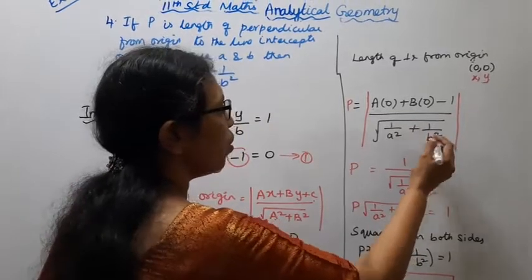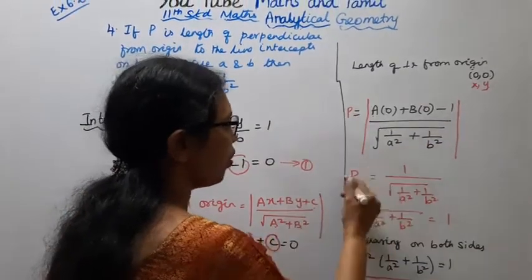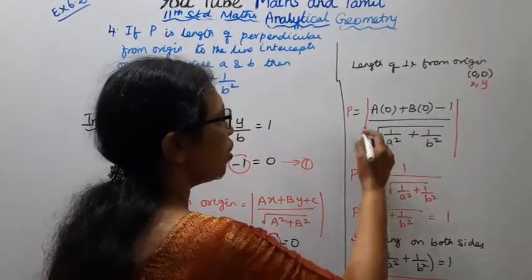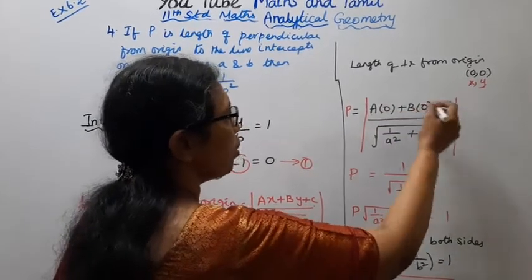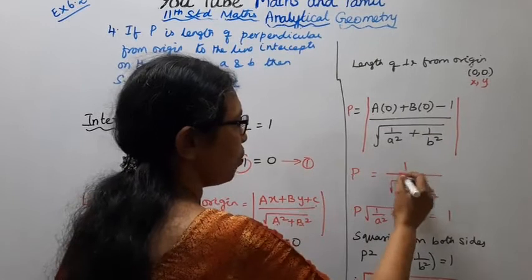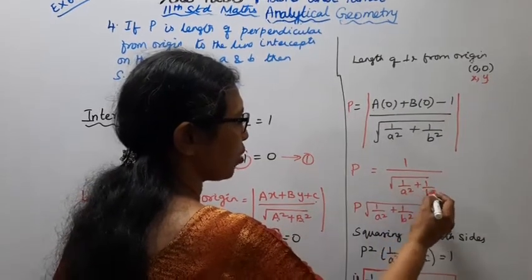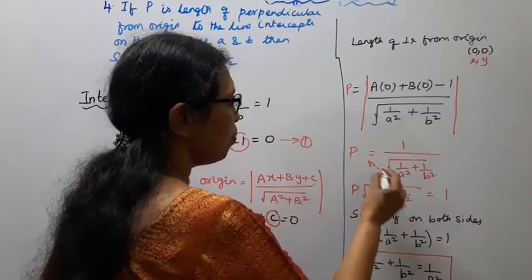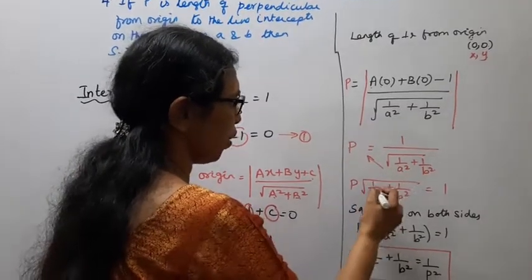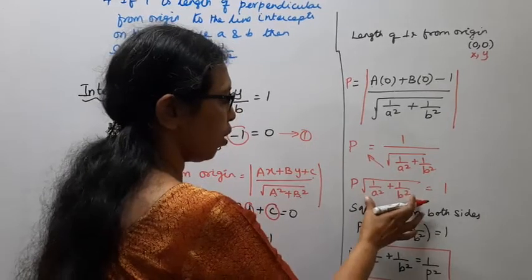Therefore, P equals mod of 0 plus 0 minus 1, divided by root of 1 by a square plus 1 by b square. This gives P equals 1 divided by root of 1 by a square plus 1 by b square. Cross multiplying: P times root of 1 by a square plus 1 by b square equals 1.